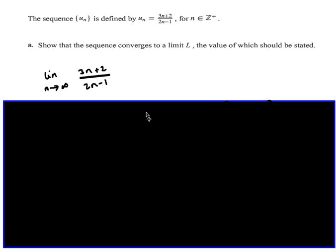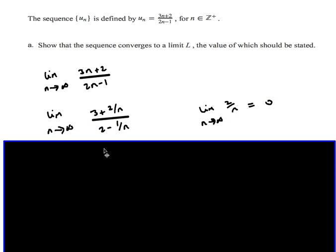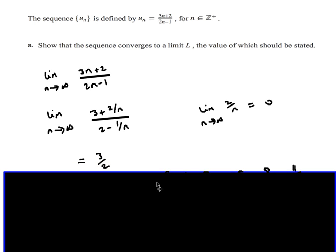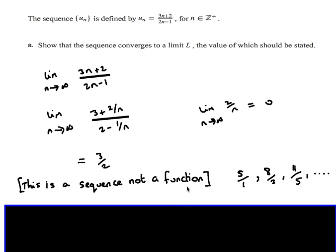The first part of the question is to show that the sequence converges and find the limit. We do exactly the same as before — we want to see what happens as n gets really large. This fraction looks very similar to the previous one. Taking the limit as n approaches infinity, the 2 over n and the 1 over n both become 0, and we end up with 3 over 2. So we've shown the sequence converges to 3 over 2, but just be careful — this is a sequence, not a function.